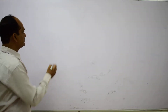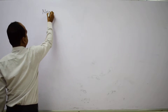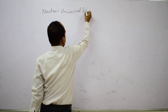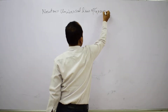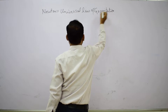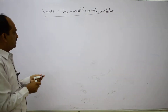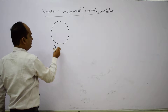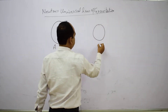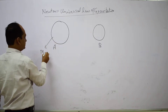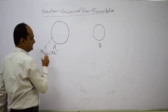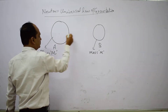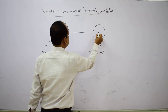Today we will discuss Newton's universal law of gravitation. According to Newton, if we have two bodies in this universe — body A and body B — having masses capital M and small m respectively, and the centers of the bodies are separated by a distance r.